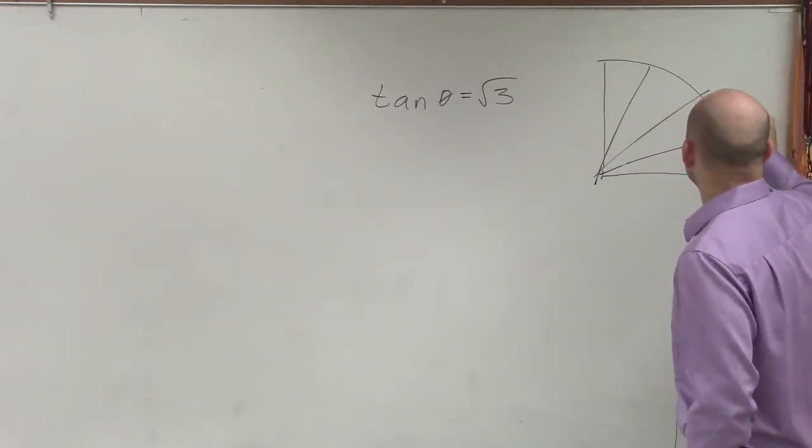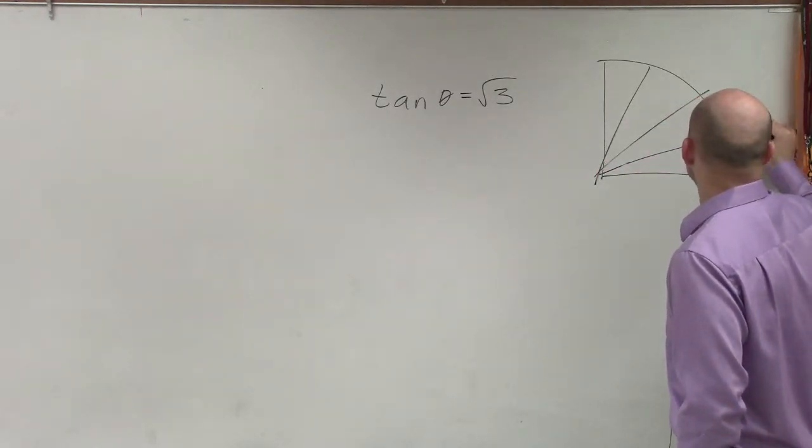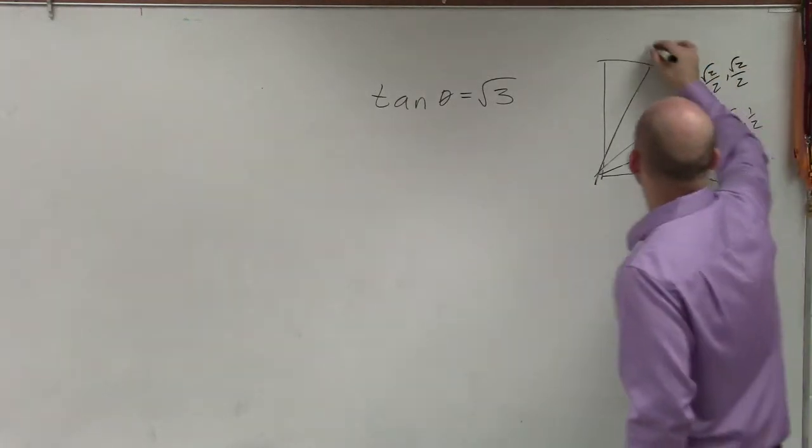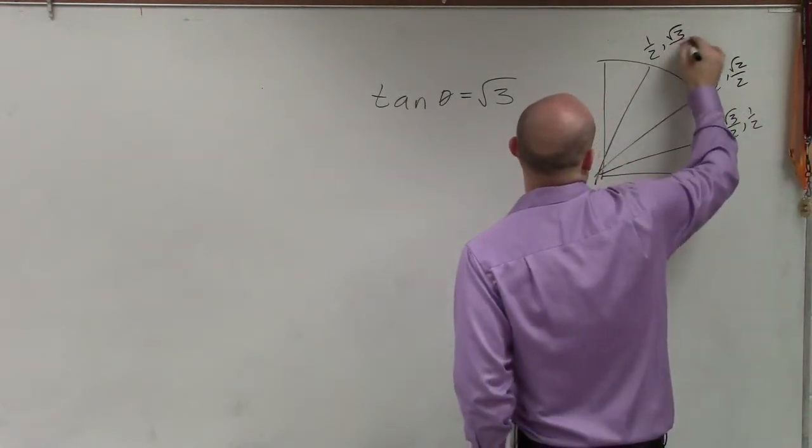I have here is the square root of 3 over 2, comma, 1 half. That's square root of 2 over 2, comma, square root of 2 over 2. Here's 1 half, comma, square root of 3 over 2.